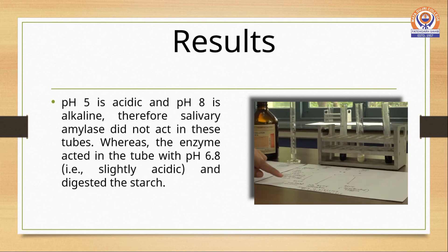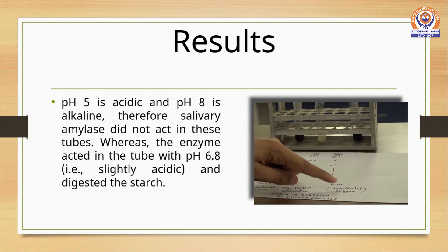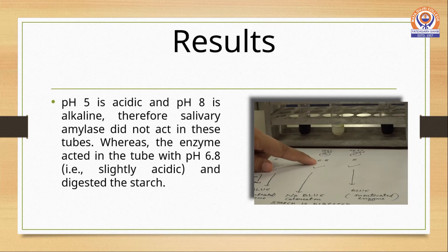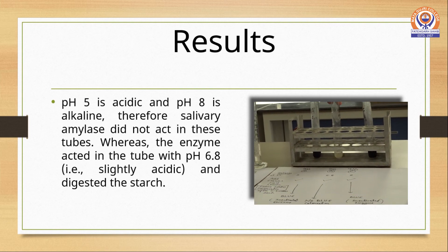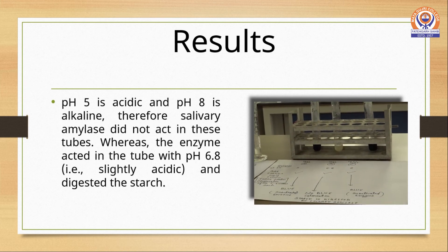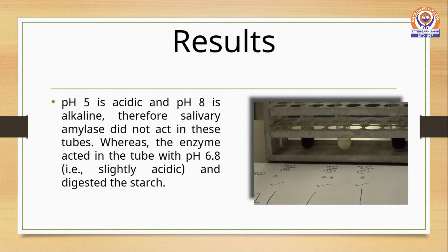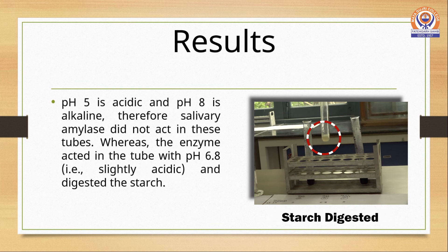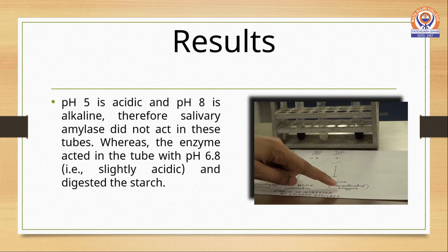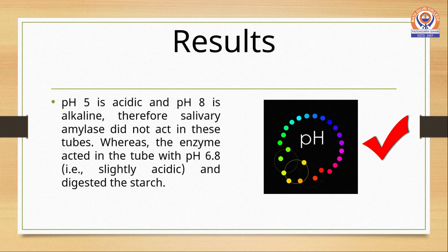The result is that pH 5 is acidic while pH 8 is basic. Therefore, salivary amylase did not act in these tubes, whereas the enzyme acted in the tube with pH 6.8. In that particular tube where the pH was 6.8, the salivary amylase enzyme was active and it could digest and break down the starch into maltose. Therefore, test tube B gave no colour with iodine solution since the starch was no longer present. While in test tubes A and C, the enzyme could not act on starch as it needs a specific pH for its activity.